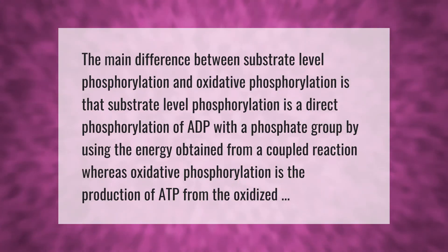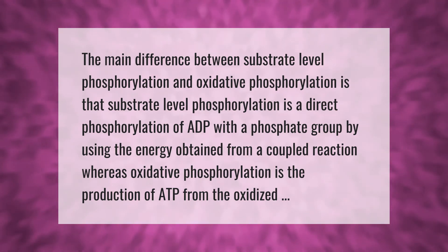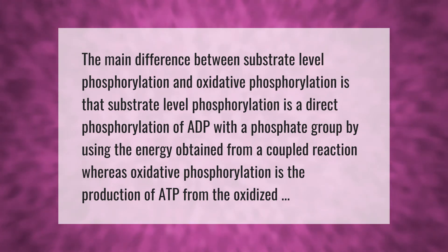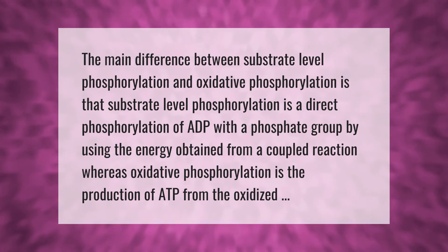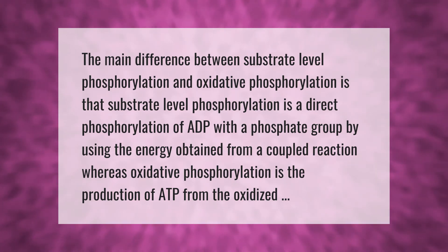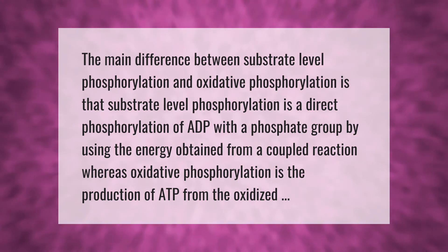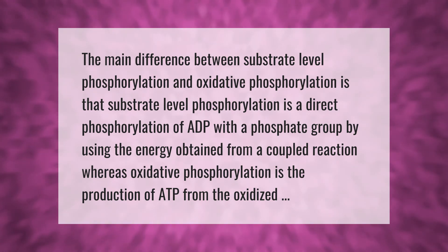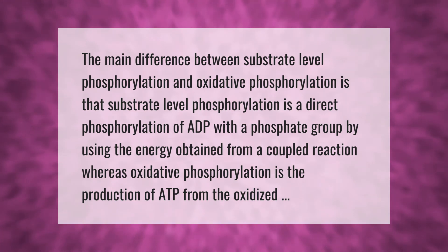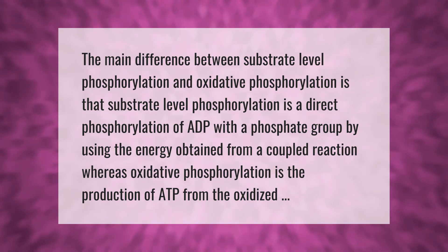The main difference between substrate-level phosphorylation and oxidative phosphorylation is that substrate-level phosphorylation is a direct phosphorylation of ADP with a phosphate group using the energy obtained from a coupled reaction, whereas oxidative phosphorylation is the production of ATP from the oxidized substrates.